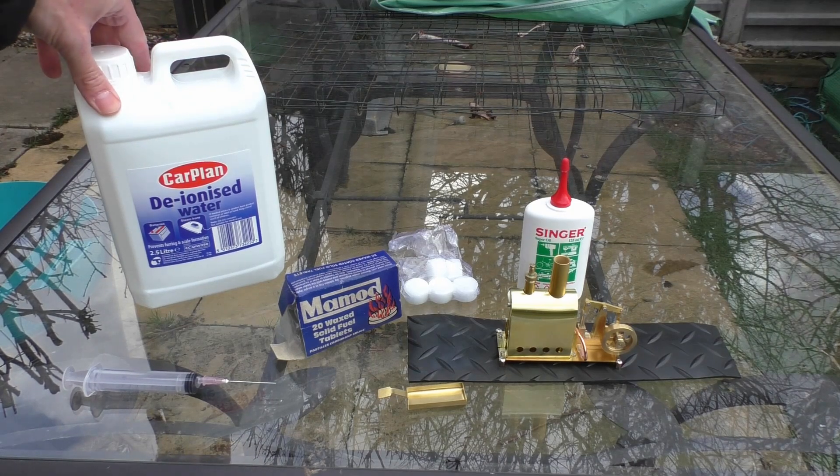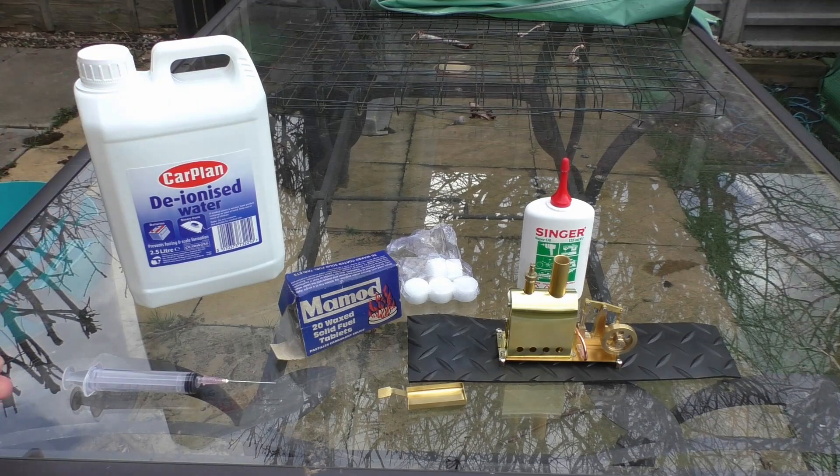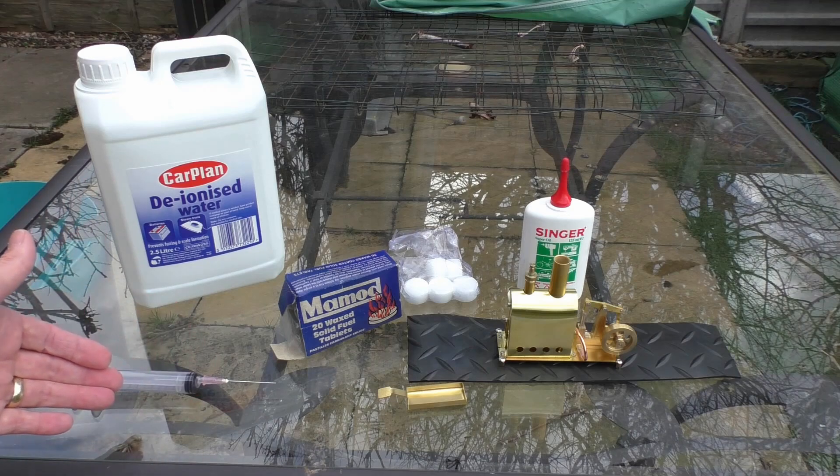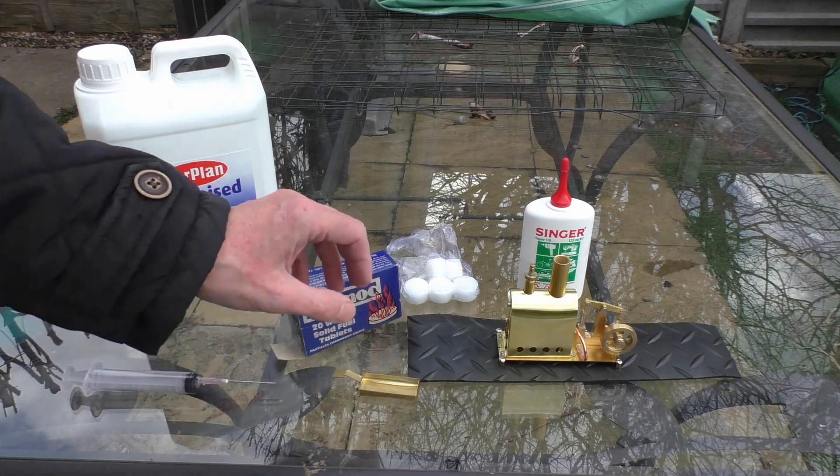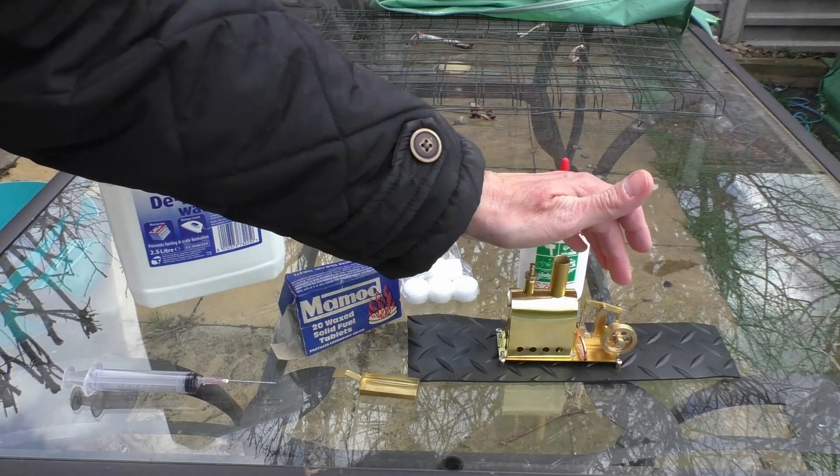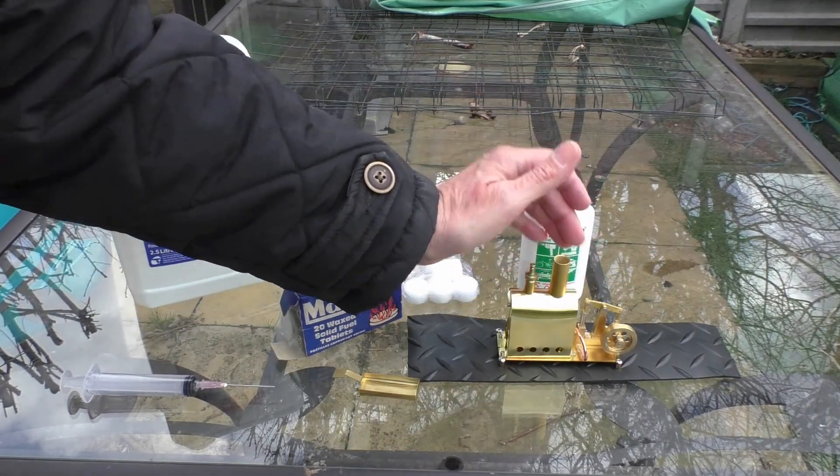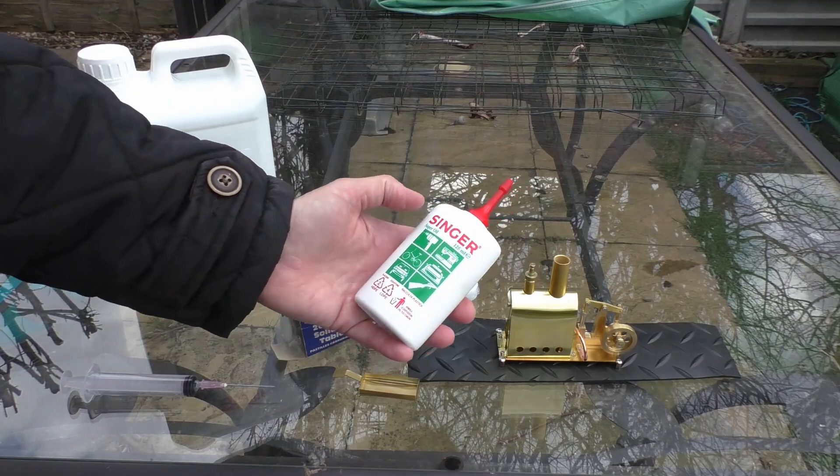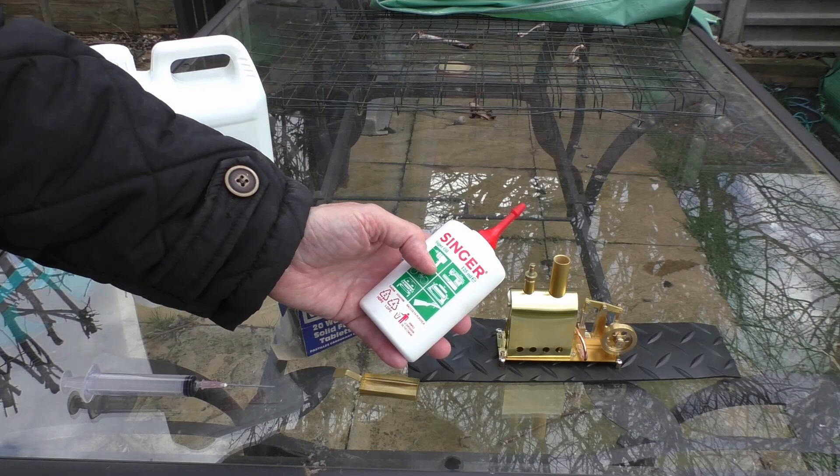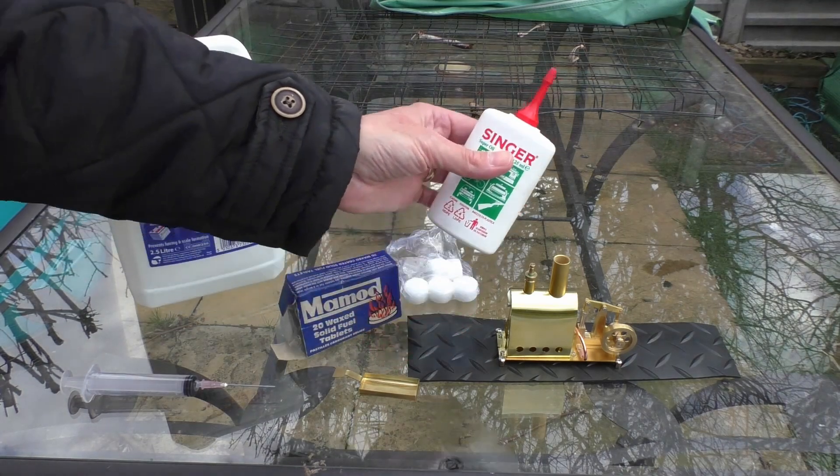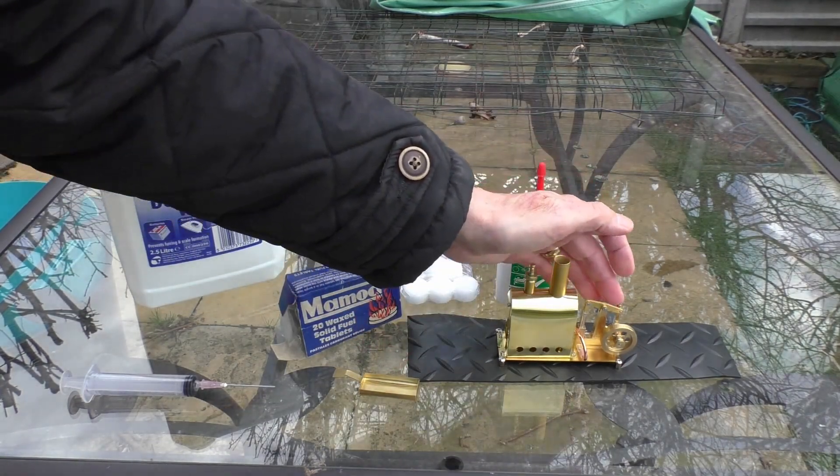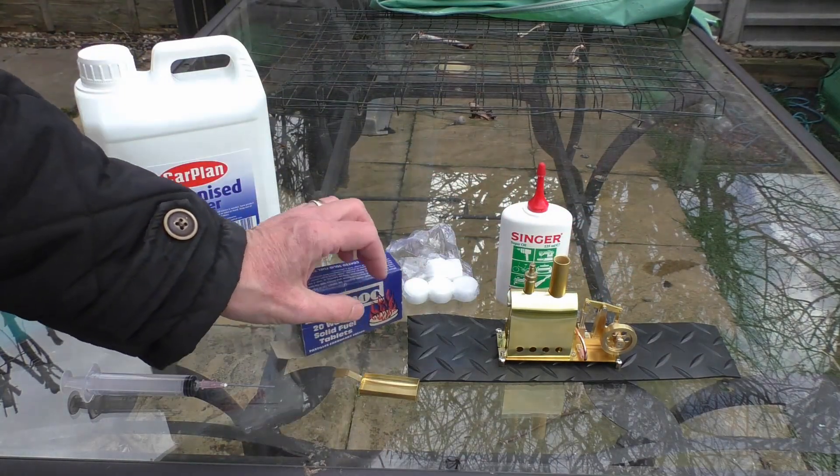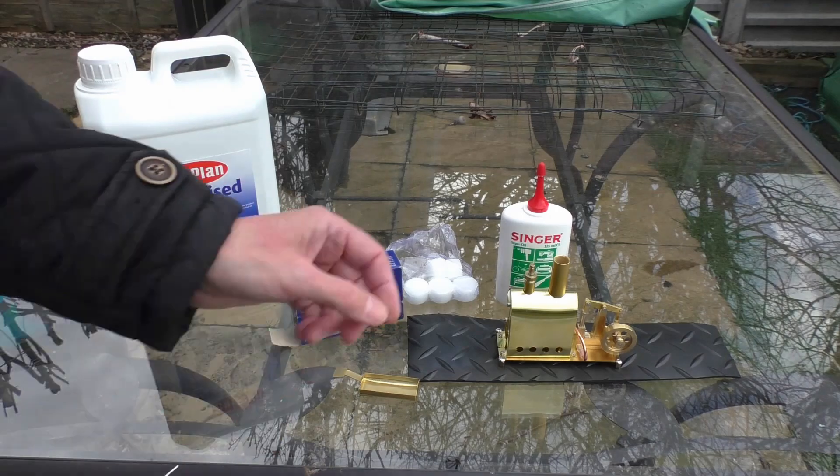I'm using this Carplan deionized water, extremely cheap on Amazon. I think this large 2.5 liter bottle was something silly like two pound eighty delivered. You can get away with using rain water. It's a good idea to filter it first to remove any sediment, but as long as you don't use tap water you'll be absolutely fine. And then when it comes to the moving parts, you just need to apply a small amount of oil. I like this Super Oil by Singer. Again, this was about five or six pounds off Amazon and it lasts a long, long time. I mean, you can use any type of oil, even a vegetable oil, just on the moving parts. Better to oil it than run it dry.